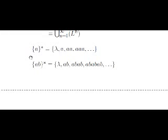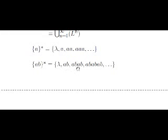Let's see another example. Consider the language containing only the word AB. In this case, after applying the star operation, we will obtain lambda, AB, ABAB, and so on.